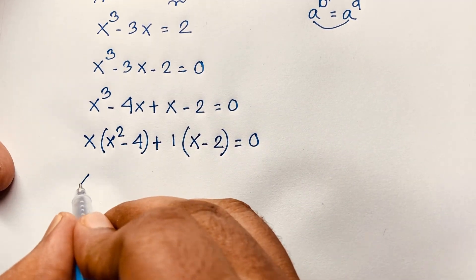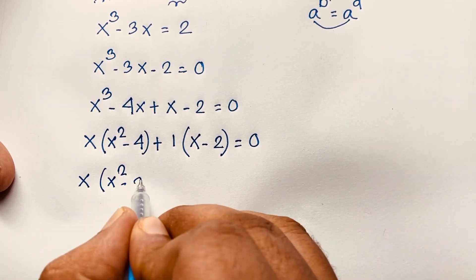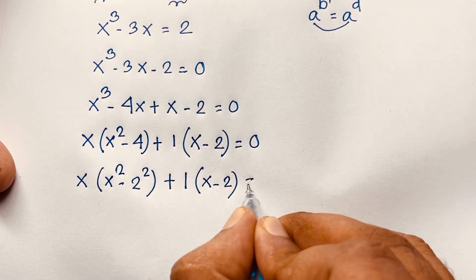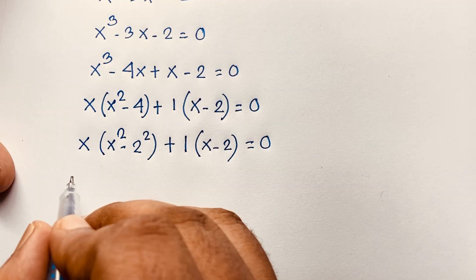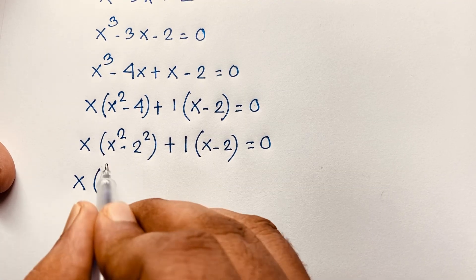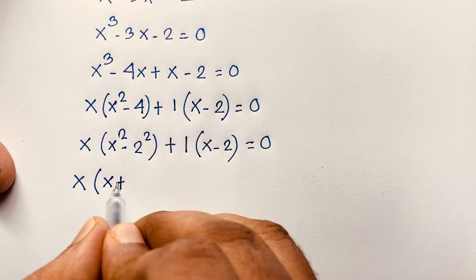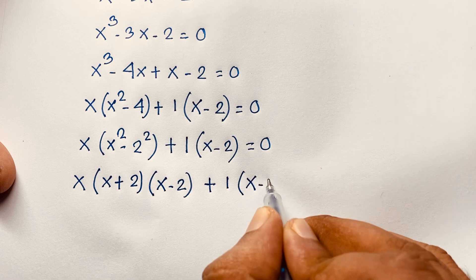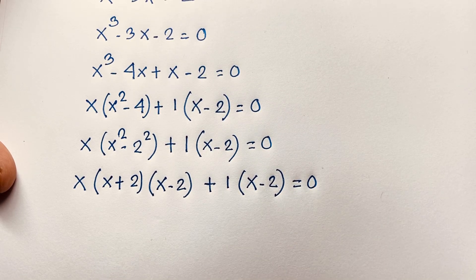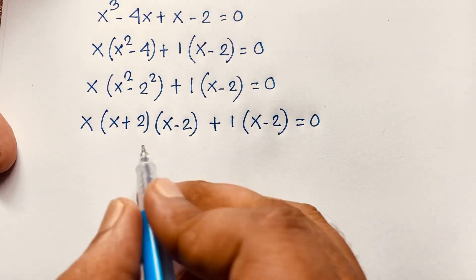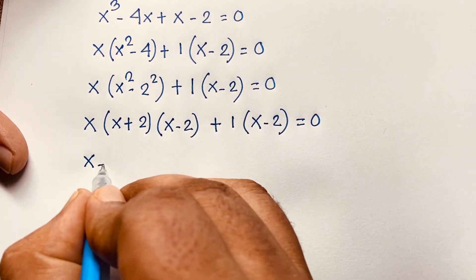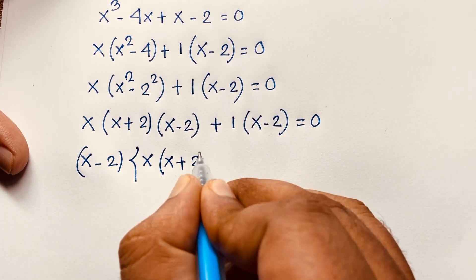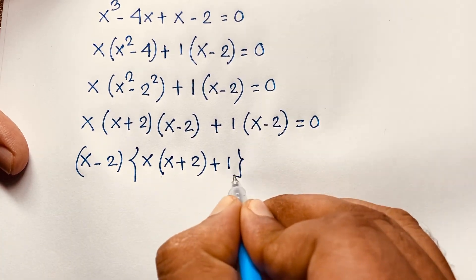I can see that x squared minus 4 is a difference of squares: a squared minus b squared equals (a plus b)(a minus b). So this becomes x times (x plus 2)(x minus 2), plus 1 times (x minus 2) equals 0. Now x minus 2 is a common factor, so factoring it out: (x minus 2) times (x times (x plus 2) plus 1) equals 0.